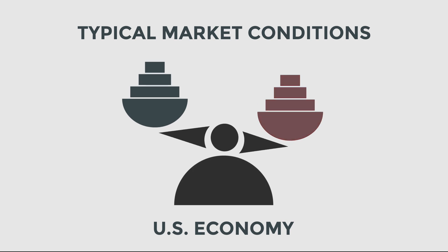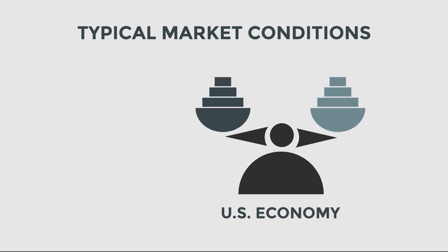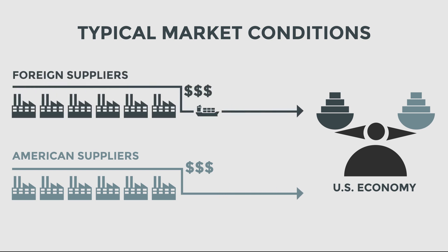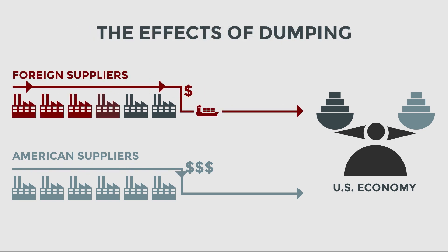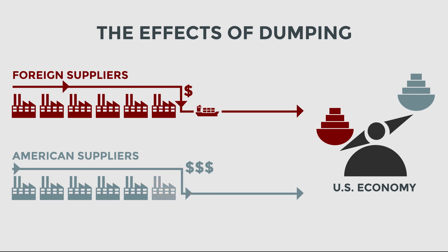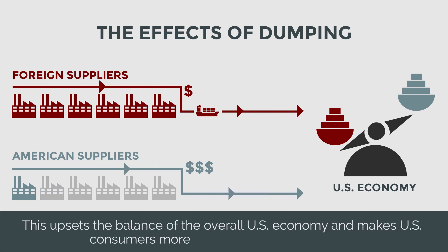In typical market conditions, there is a balance in the U.S. economy between goods produced or manufactured on U.S. soil and commodities imported from foreign suppliers. This scenario results in U.S. suppliers staying in business with a healthy amount of importing to support the demand of consumers. However, if a foreign country is able to dump an increased amount of a certain commodity into the U.S. economy, it can cause injury to the U.S. industry manufacturing those same goods and potentially cause U.S. manufacturers to close when they cannot compete. This upsets the balance of the overall U.S. economy and makes U.S. consumers more reliant on foreign suppliers.